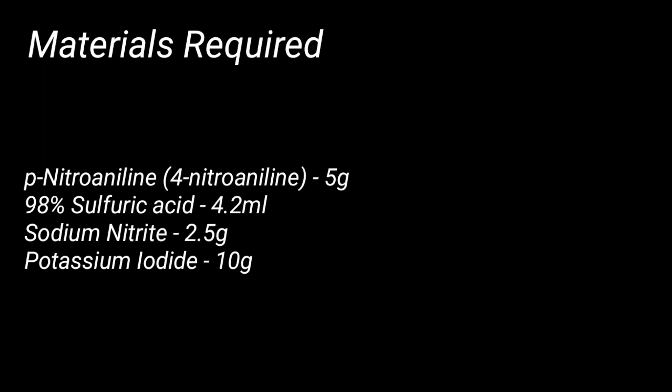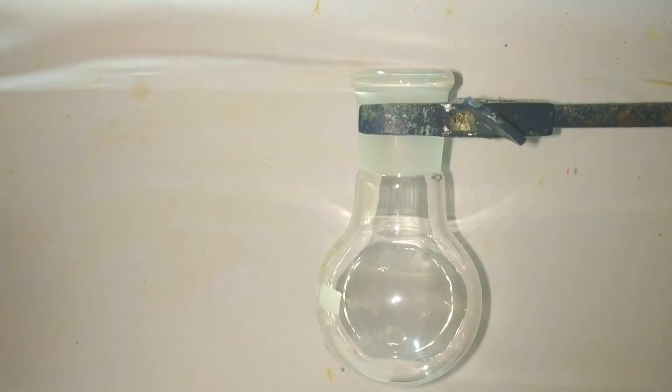Materials required for this preparation include 5 grams of paranitroaniline, 4.2 milliliters of 98% sulfuric acid, 2.5 grams of sodium nitrite, and 10 grams of potassium iodide.